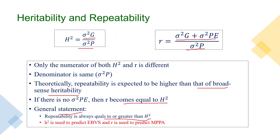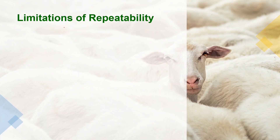One major difference between repeatability and heritability is that heritability is used to predict Estimated Breeding Values (EBVs), while repeatability is used to predict Most Probable Producing Abilities (MPPAs). Also, repeatability is used for traits that are repeated in the lifetime of animals, whereas heritability is not restricted to such traits.